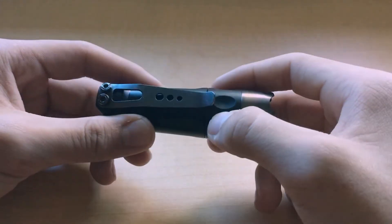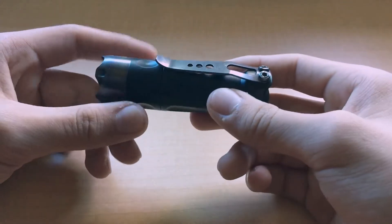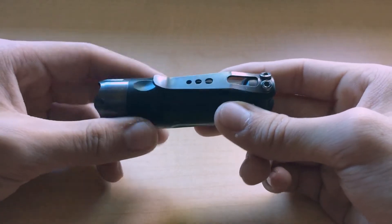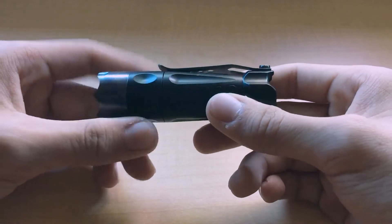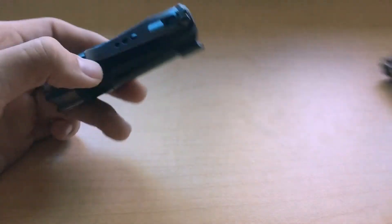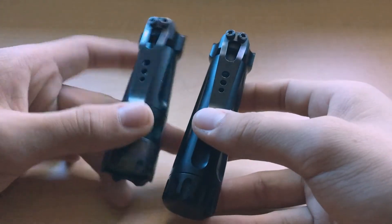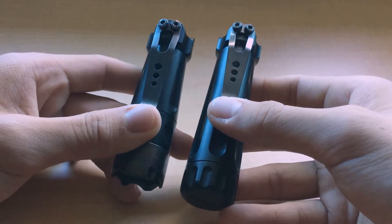Over Ready started off doing mostly mod work on already existing flashlights but quickly branched off to create their own proprietary designs. They're probably most well known for creating some of the most advanced and forward flashlights out there. A prime example in case is the Boss flashlight system that I've got in front of me here today. I say system because Over Ready has done an excellent job of creating accessories that enhance their flashlight platforms.